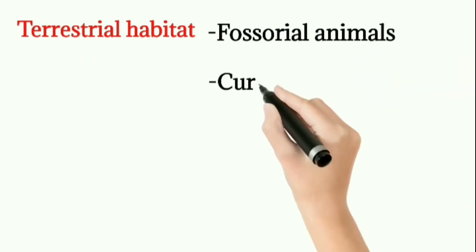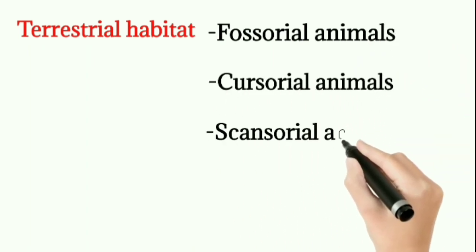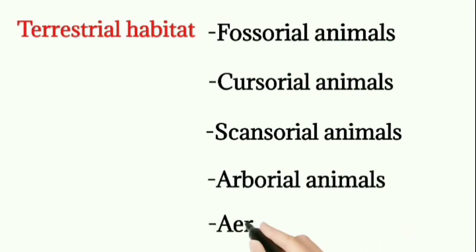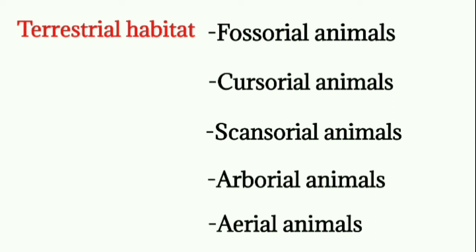The types in terrestrial habitat are: fossorial animals, cursorial animals, scansorial animals, arboreal animals, and aerial animals. Fossorial animals are burrowing animals — examples are earthworm and rabbit. Cursorial animals are fast-running animals — example is deer. Scansorial animals are crawling animals — lizards are examples. Arboreal animals live on trees — example is monkey. Aerial animals are birds — example is dove.